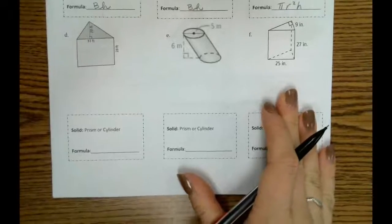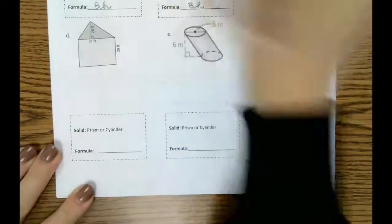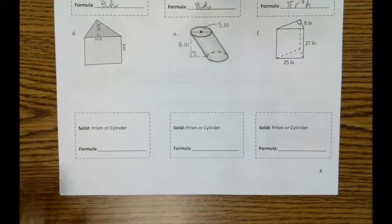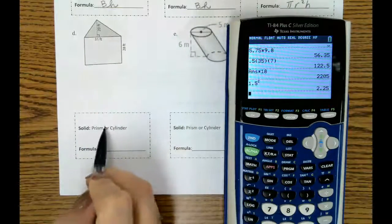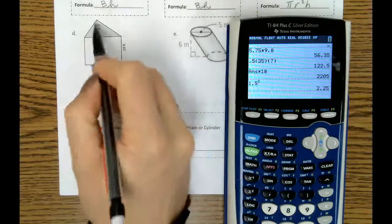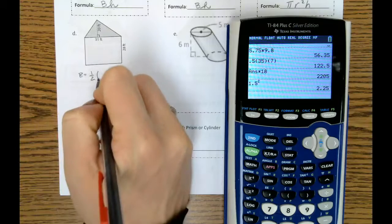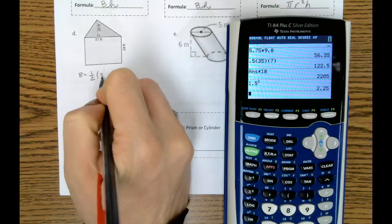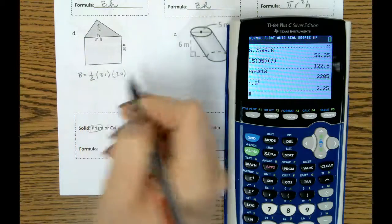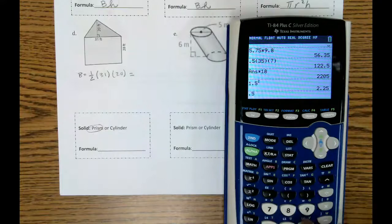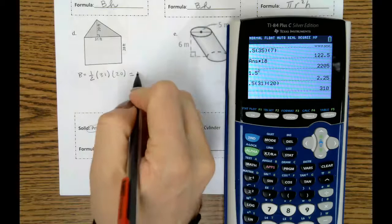Okay, let's go ahead and tackle letters D through F here. So for letter D, this is absolutely a prism. It kind of looks weird, but it is a triangular prism. So for the area of our base, we're going to do one-half base times height. So the base of our triangle is 31. The height of our triangle is 20. So that gets us 310.